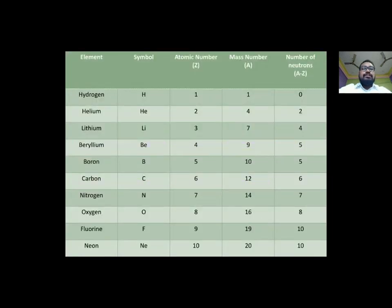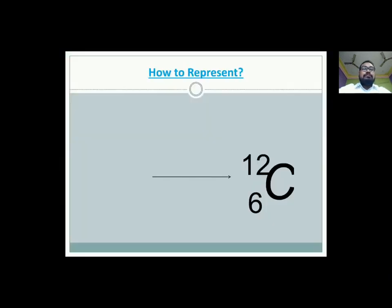Next, we have a list of elements where we have the symbol, we have the atomic number, we have the mass number and the number of neutrons. So, how to find out the neutrons, number of neutrons in any element? When it is given, when the mass number and the atomic numbers are given, the formula is mass number minus atomic number. Write it down in your copy. It will help you to represent any element.